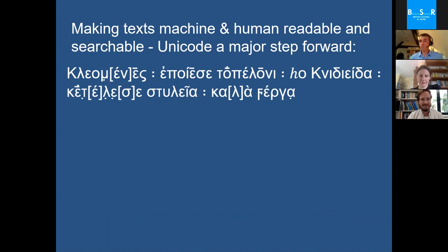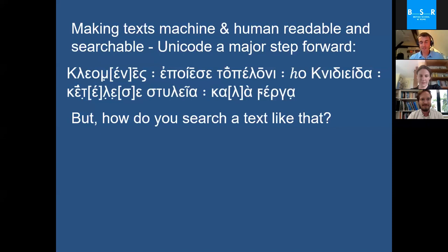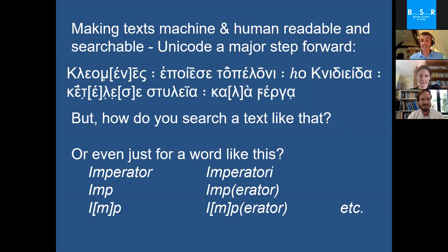Just at the level of going digital with the text there is already a challenge people have been wrestling with for a very long time. Simply displaying the inscription from the step of the Temple of Apollo in Syracuse would be a challenge without Unicode — it would not display on your screens or my screen. Beyond that, how do you run a search of any detail or refinement on a text like that? How do you run a word search when there are so many additional signs, symbols, and complications — or even for a word as simple as 'imperator', which in an epigraphic text could appear in any one of many permutations? One can overcome that with fairly intensive search algorithms and programming, but that's devoting an awful lot of effort to some very basic tasks.